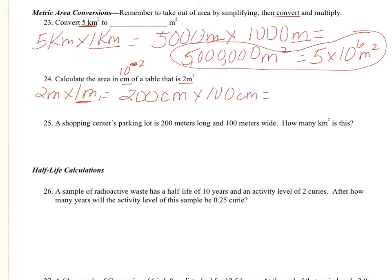There's 100 centimeters in a meter stick. Now I can multiply, and I have 1, 2, 3, 4 zeros. So 2 and 1, 2, 3, 4 zeros. And it's going to be centimeters squared because I multiplied centimeter by centimeter.